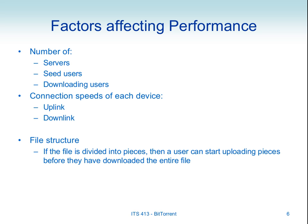How much performance gain we get depends on: how many initial seed users there are — in this example we had five seeds; how many downloading users there are; and the upload and download rates of different users. In real life, users on the internet will have different upload and download rates, which impacts the overall performance of how fast every user gets the file.